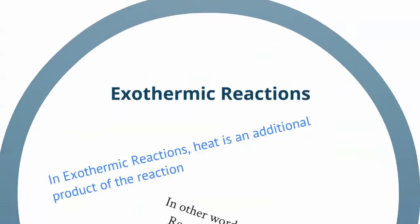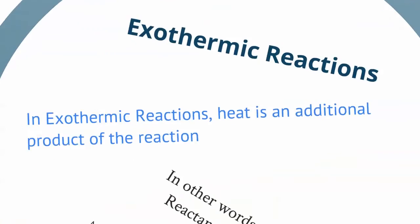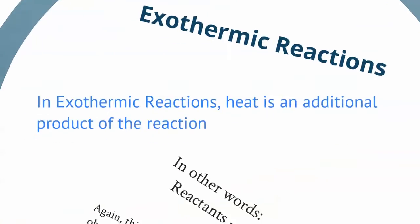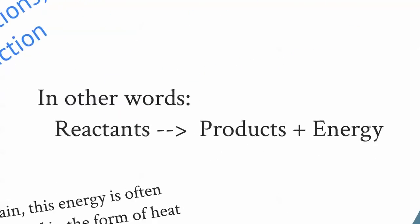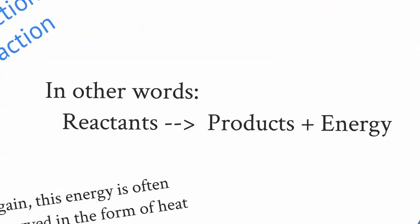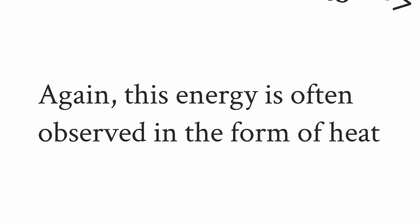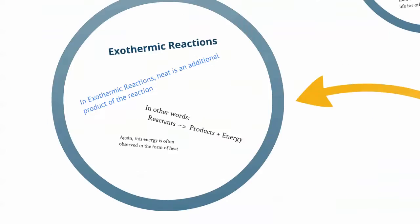In an exothermic reaction, it's just the opposite. Heat or energy is going to be an additional product of the reaction. So your reactants give you a product plus some energy, and again it's often in the form of heat. So energy and heat are used pretty interchangeably here.